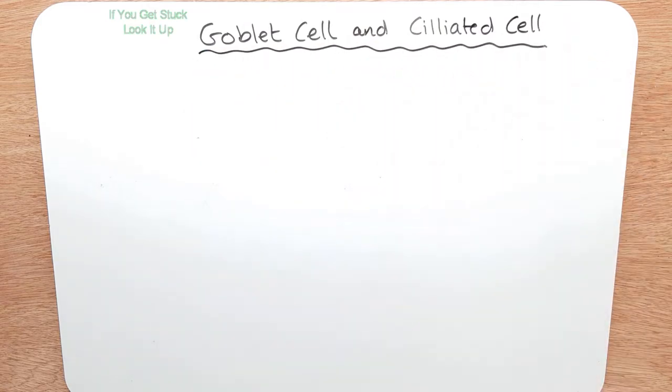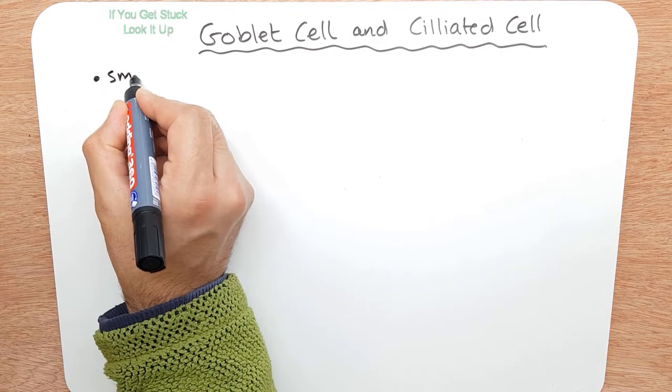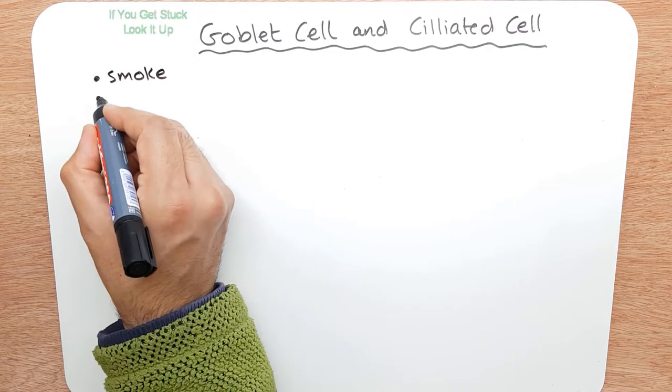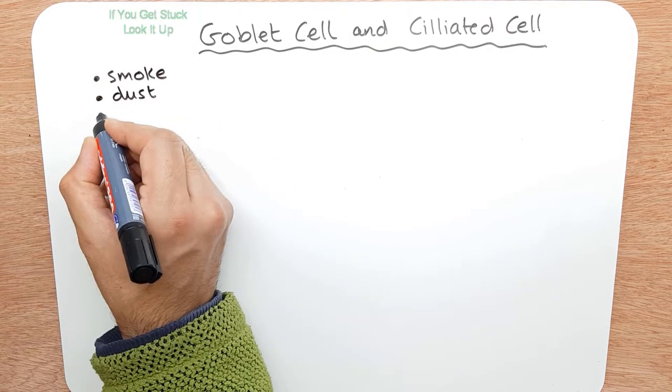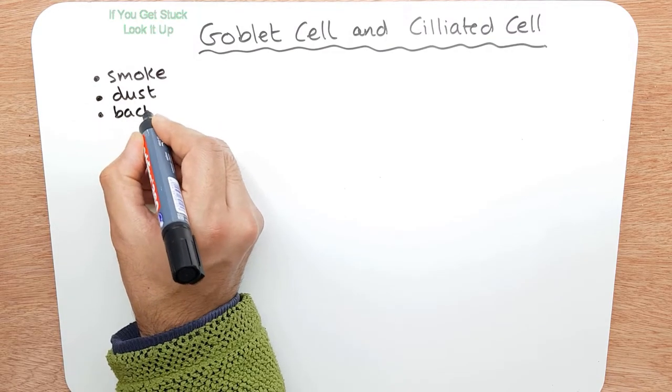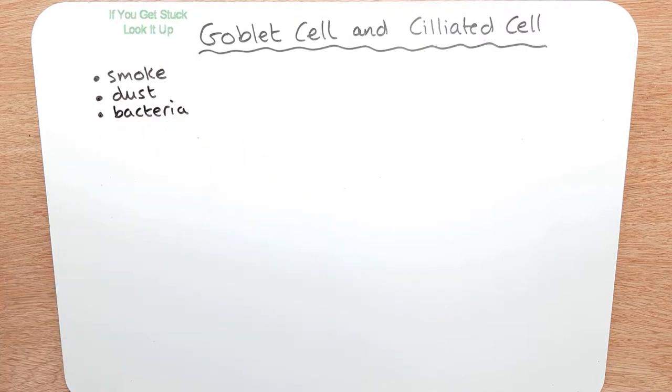Just for simplicity's sake that's what we'll call them. So when you breathe in, you breathe in lots of smoke, dust, bacteria, amongst other things. And to stop those going all the way deep into your lungs you have two cells. And these are the ones that we need to learn.